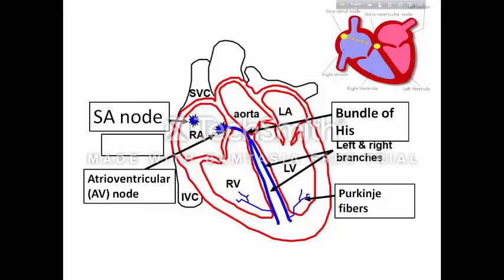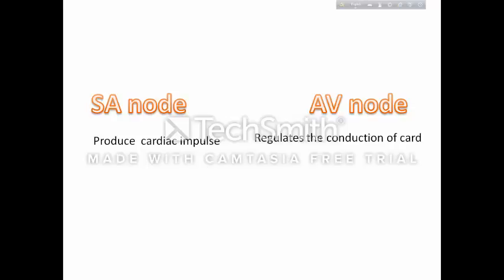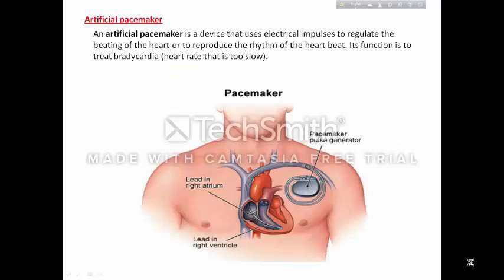The Bundle of His divides into the left and right bundle branches, one going to each ventricle. So remember: the SA node produces the cardiac impulse, and the AV node regulates the pace of the cardiac impulse — that is, at what speed the cardiac impulse is transmitted to the ventricle via the Bundle of His and Purkinje fibres. That is why SA node is called the pacemaker and AV node is called the pace setter.